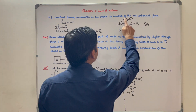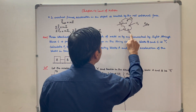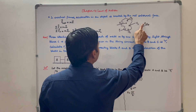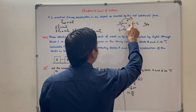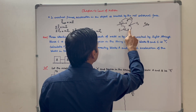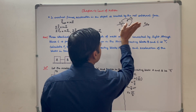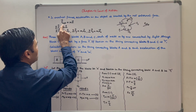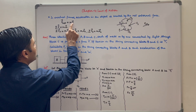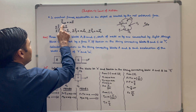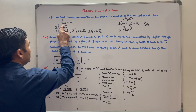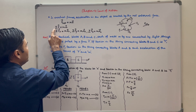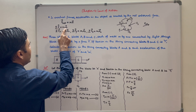Suppose this is an object and there are many forces applied on it. F net represents the vector sum of all these forces. Then this object will be accelerated along F net. F net is equal to mass into acceleration, and F net is represented by summation of all the forces. So summation F is equal to MA.